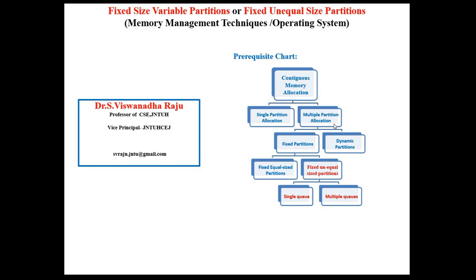The multiple partition allocation method is further divided into two categories: one is fixed partitions and the other is dynamic partitions. Dynamic partition method will be discussed in a future video. The fixed partitions are classified again into two categories: one is fixed equal sized partitions, and the other is fixed unequal sized partitions. In this session, we will be focusing on fixed unequal sized partitions.